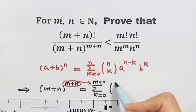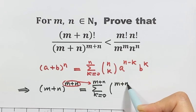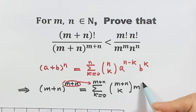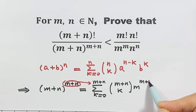Then here (m plus n) choose k. Then a is m, so m to the power (m plus n minus k). Then b is n, so n to the power k.